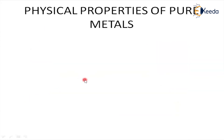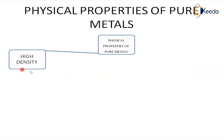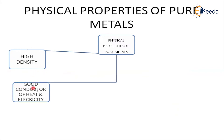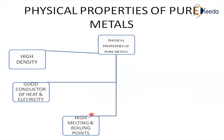What are the various physical properties of pure metals? Pure metals have high density. Density is directly related to strength, so pure metals have the highest strength compared to any other material. They are also good conductors of heat and electricity — heat and electricity can easily pass through pure metal. They have a high melting point; all metal melting and boiling points are very high. And they are lustrous, meaning shining — almost 90% of metals are shining.